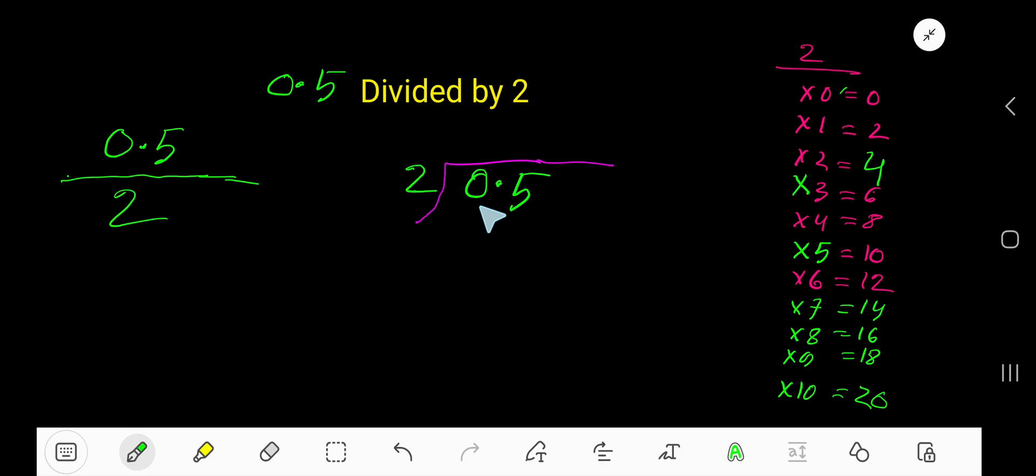So 2 goes into 0 how many times? 2 goes into 0, 0 times. Write 0. 0 times 2 is 0. If you subtract, you are getting 0.